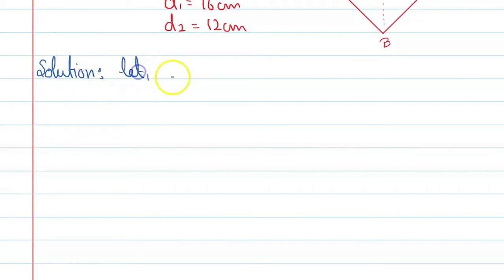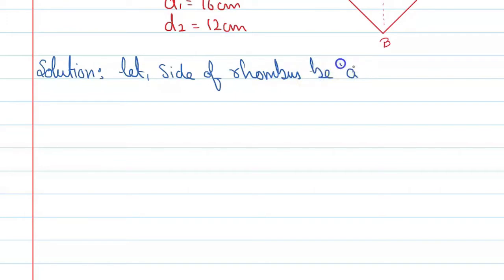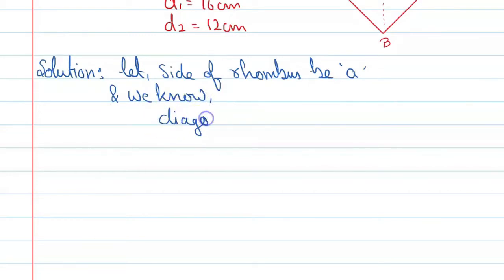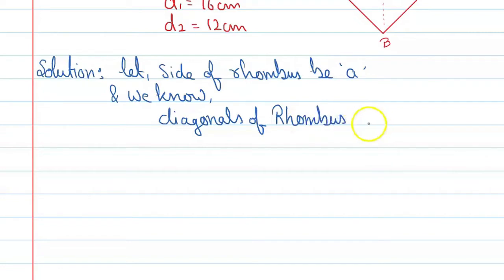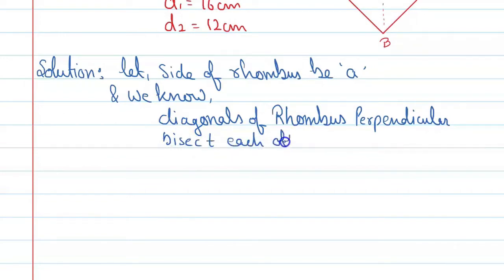Let the sides of the rhombus be 'a'. We know that the diagonals of a rhombus perpendicularly bisect each other.